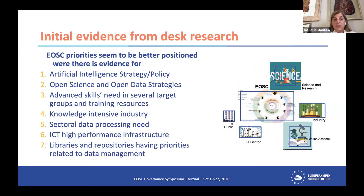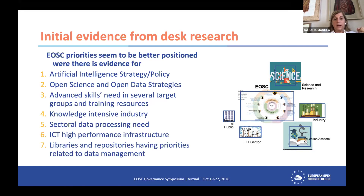The initial evidence from desk research is that EOSC priorities seem to be better positioned where there is evidence of artificial intelligence strategy and policy — because data and data science are important — and where countries have open science and open data strategies. There are advanced skills needs in several target groups: knowledge-intensive industry, sectoral data processing, ICT high-performance infrastructure, and libraries and repositories with priority related to data management. There is a mix of conditions that make EOSC more of a priority for some countries than others, and this is something we need to think about and better align.